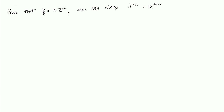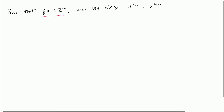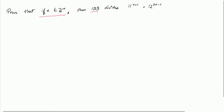In this example of a divisibility proof using induction, I'm asked to prove that if n belongs to the positive integers, that 133 divides 11 to the n plus 1, plus 12 to the 2n minus 1. This is actually really similar to another example I did, but I want to do another example to make sure the idea comes across correctly.